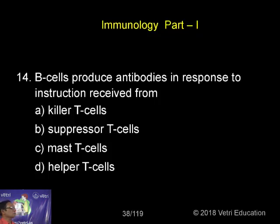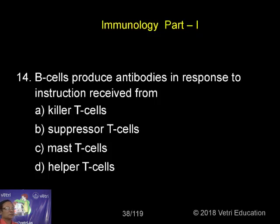B cells produce antibodies in response to instructions received from what is called helper T cells. The helper T cells are acting as a switch on/off mechanism, stimulating the B lymphocytes to produce antibodies.